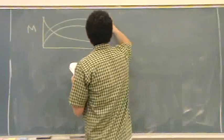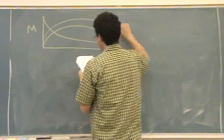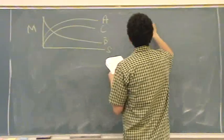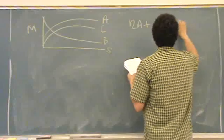We've got A, C, and B. We've got 2A plus C goes to B.